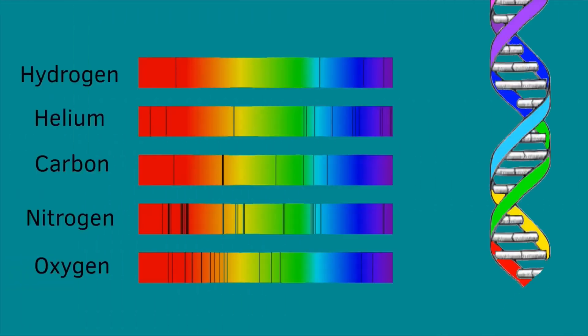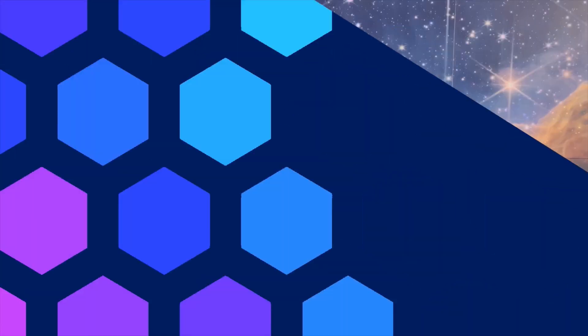Every element has a unique spectrum, similar to how every human has a unique DNA pattern. Atoms absorb and emit light due to electron excitation. Imagine an atom's energy levels are stairs, where the ground is the nucleus and the elastic band is the electromagnetic force. The higher the electron, the more energy it has. But to climb up, an electron must become excited, which occurs when it absorbs energy from light.